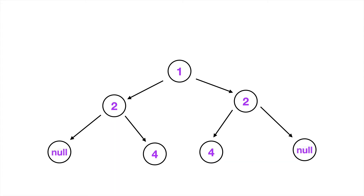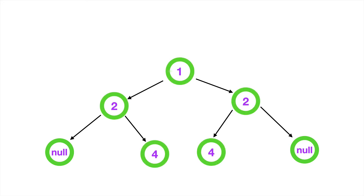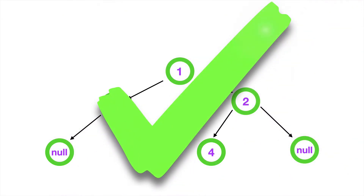Another thing we might encounter when visiting child nodes is that they're null. As long as both nodes are null, we can consider them symmetrical because they both have the value of null. In that case, the entire tree checks out as symmetrical and we return true.